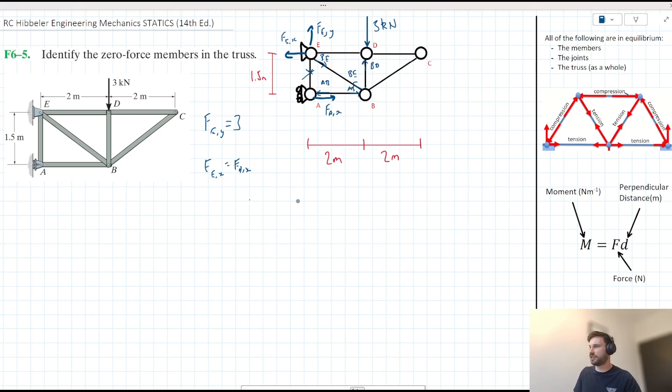We could look at joint D as well. We know that BD is equal to 3 by inspection since it's countering this 3kN external force here. OK, we're in a nice place now.